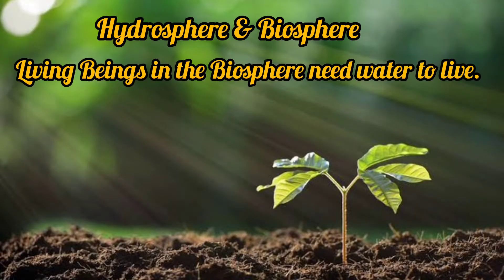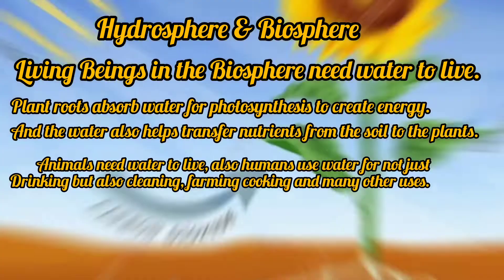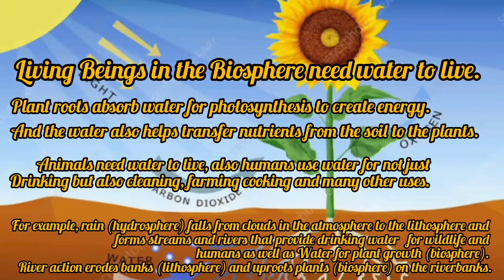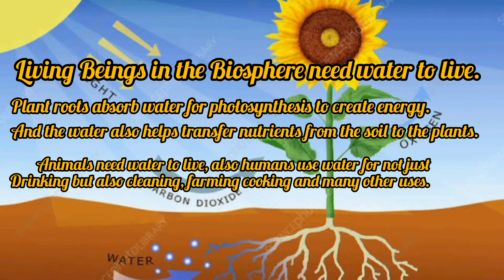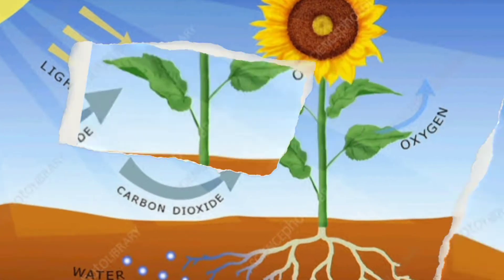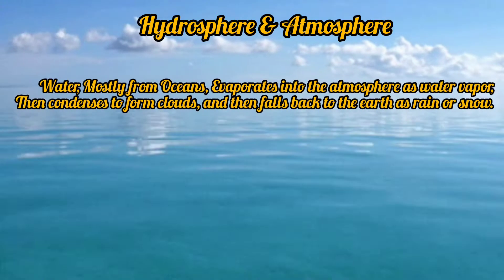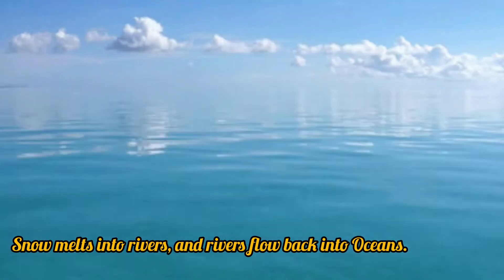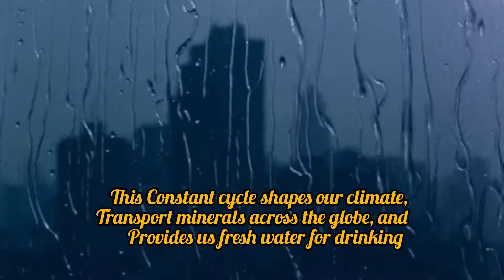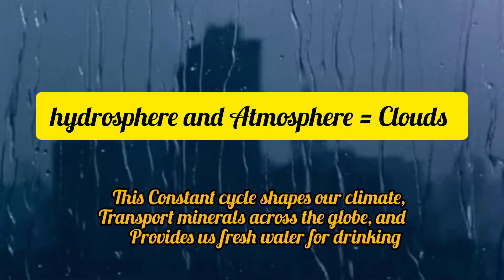Living beings in the biosphere need water to live. Plant roots absorb water and potassium to create energy, and the water also helps transfer nutrients from the soil to the plants. Water, mostly from oceans, evaporates into the atmosphere as water vapor, then condenses to form clouds and falls back to the earth as rain or snow.